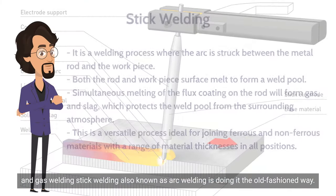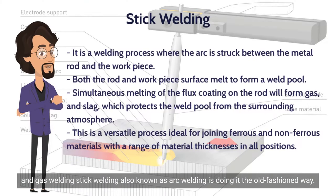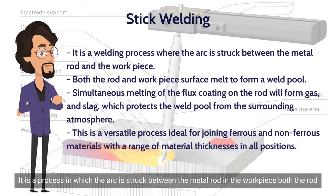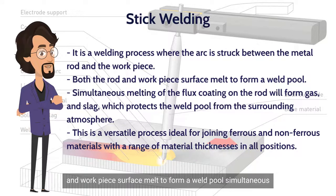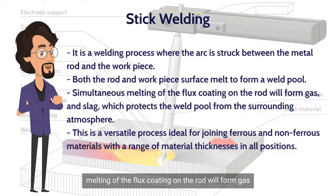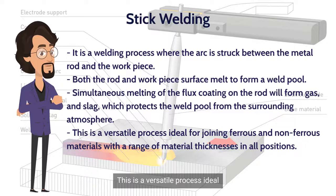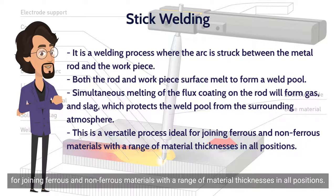Stick welding, also known as arc welding, is the old-fashioned way — it is a bit harder to master. Stick welding uses a stick electrode welding rod. It is a process in which the arc is struck between the metal rod and the workpiece. Both the rod and workpiece surface melt to form a weld pool. Simultaneous melting of the flux coating on the rod forms gas and slag which protect the weld pool from the surrounding atmosphere. This is a versatile process ideal for joining ferrous and non-ferrous materials with a range of material thicknesses in all positions.